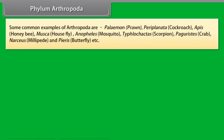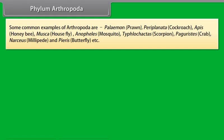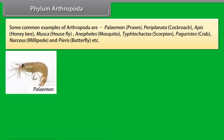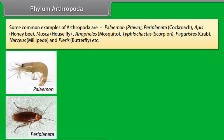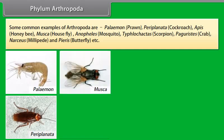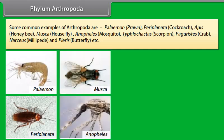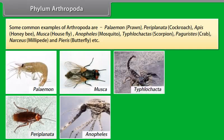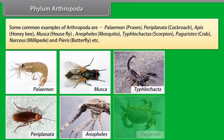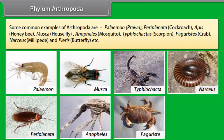Some common examples of Arthropoda are Palaemon (Prawn), Periplaneta (Cockroach), Apis (Honeybee), Musca (Housefly), Anopheles (Mosquito), Tityus (Scorpion), Pagurus (Crab), Narceus (Millipede), and Papilio (Butterfly), etc.